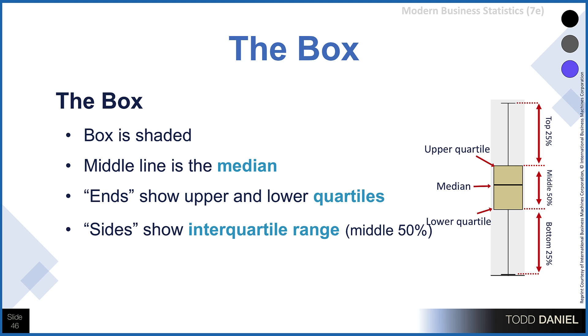Well, let's break apart the box and the whiskers and see what we can determine from each one. The box is the shaded portion of this box and whisker plot. The thick middle line that you see is the median. The ends of the box show the upper and lower quartiles. So that'd be quartile one and quartile three. And then the sides of the box show the interquartile range, or the middle 50% of the scores.